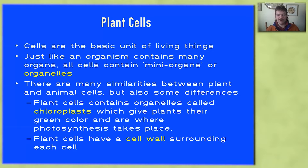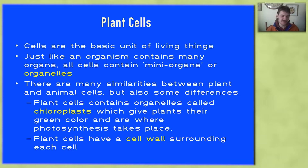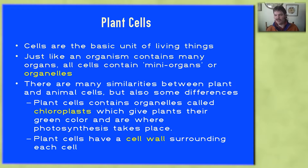They all contain many organs, just as we contain different organs that have different functions. Within each cell there are different organs, many organs, called organelles, that each perform different functions within that cell. There are many similarities, but a few of the important differences relevant to this presentation are that plant cells contain a specific kind of organelle called a chloroplast.